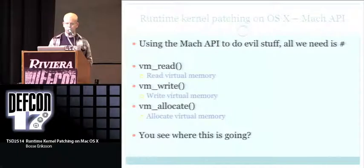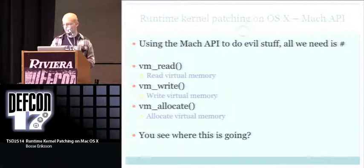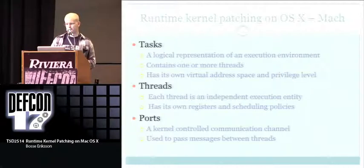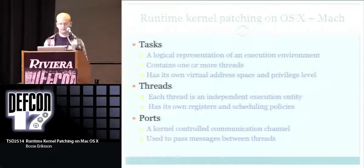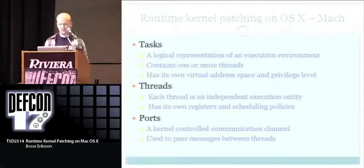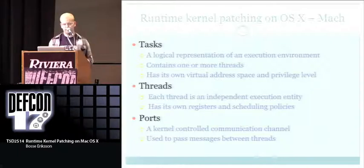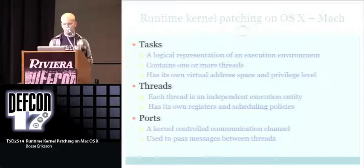OSX provides functions exported by the Mach layer to do this: vm_read, vm_write, and vm_allocate — all you need is root. The Mach part of the XNU kernel has tasks, which are logical representations of an execution environment. Tasks contain one or more threads, and threads have their own registers and scheduling policies. Importantly, there are ports — message communication channels used to send messages between processes.